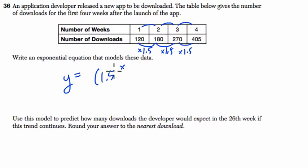But we also need a starting point, and starting is usually thought of as 0, at 0 weeks. So 1.5 times what is 120? To figure this out, you can divide 120 by 1.5, and that missing number would be 80.